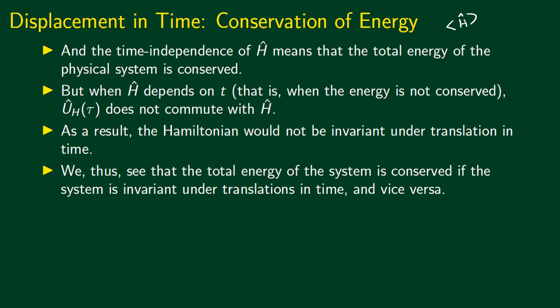When the Hamiltonian depends on time, that is when energy is not conserved, the unitary operator U hat does not commute with the Hamiltonian. In that case, the corresponding unitary operator is not simply exponential i by h bar tau H hat — it is a more complicated expression, such as the Dyson series. When the Hamiltonian depends on time, the Hamiltonian changes in time, which means the unitary operator for time transformation cannot commute with it, so the Hamiltonian is not invariant under time translation.